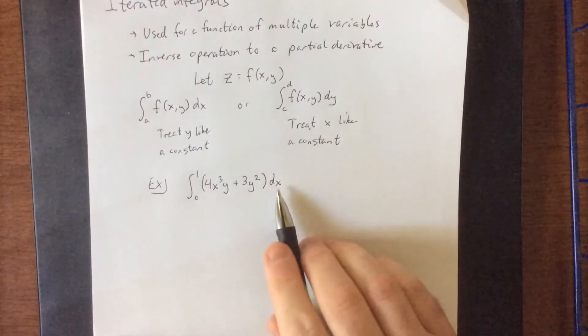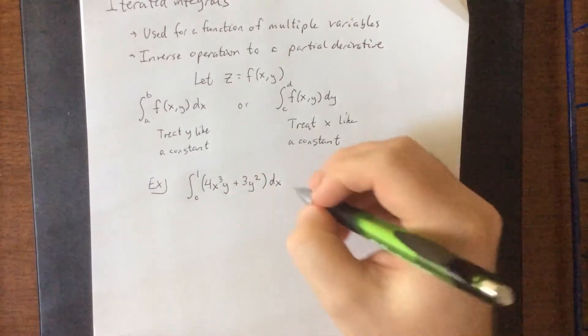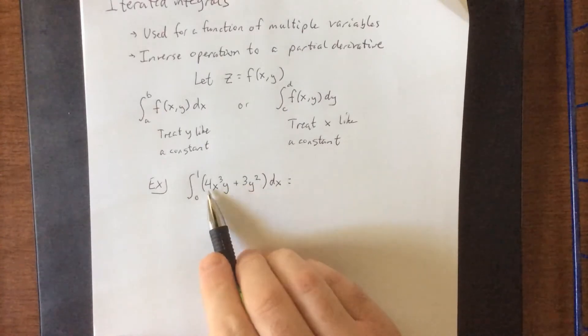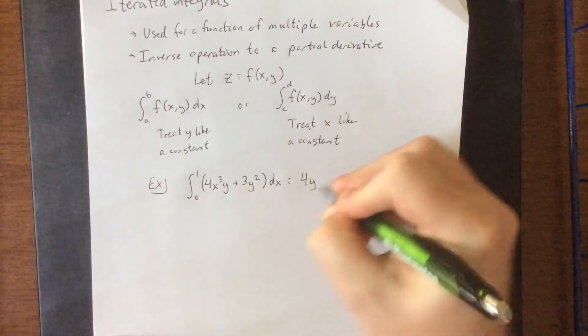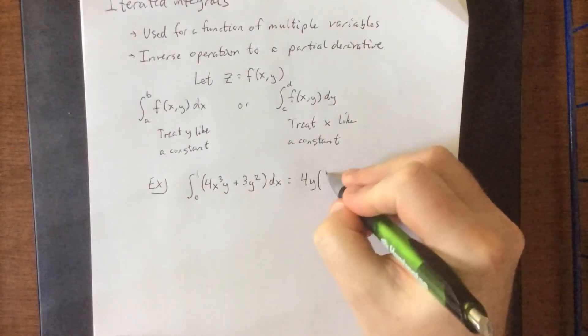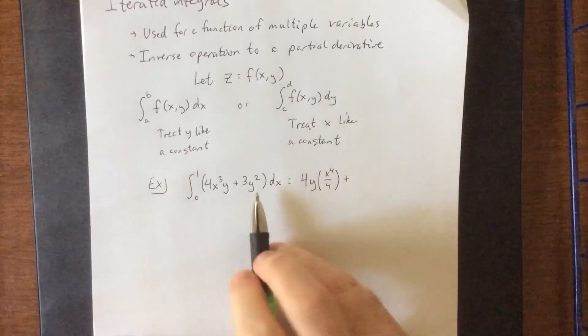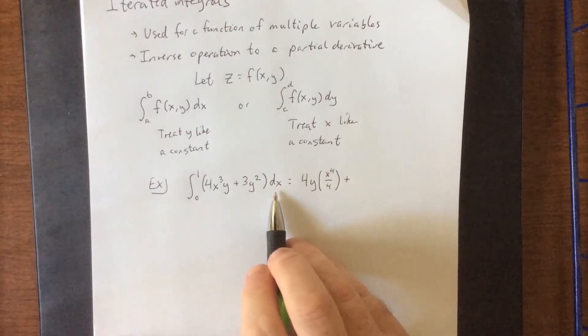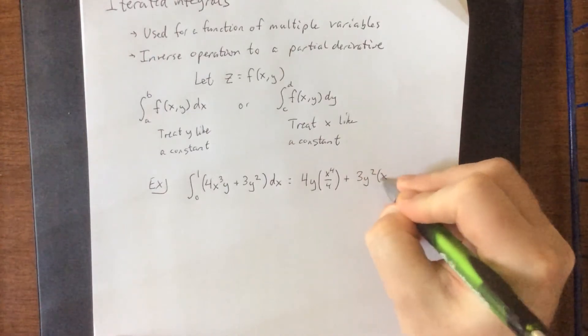So with x being our variable, we're treating anything up here that is a y as though it is simply a constant. So when I say 4x³y, the 4 and the y are both being treated as constant multiples. So we could do 4y as a constant multiple, and then integrate the x³, which of course would be x⁴ divided by 4, plus 3y² is now a constant term.